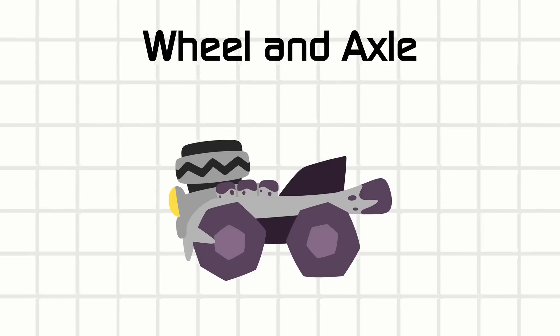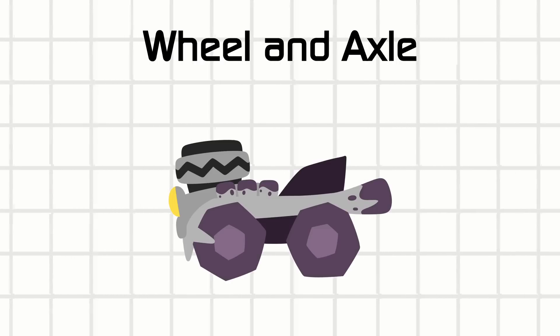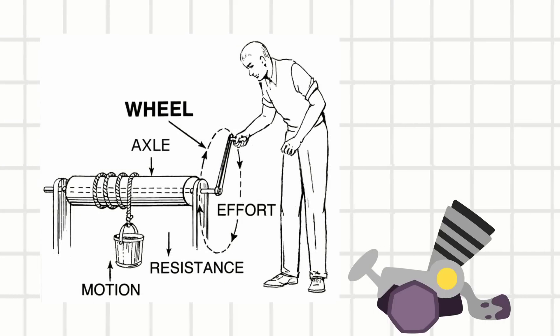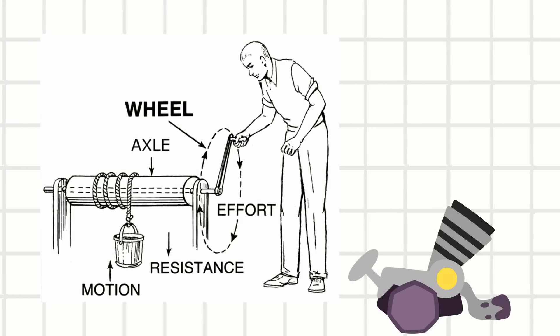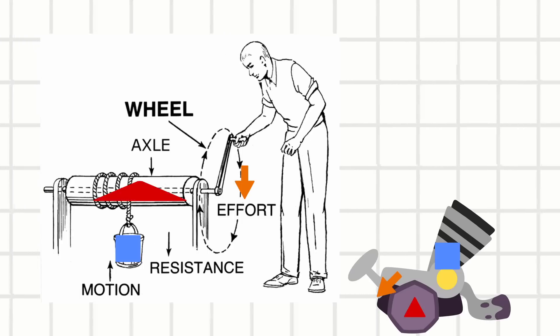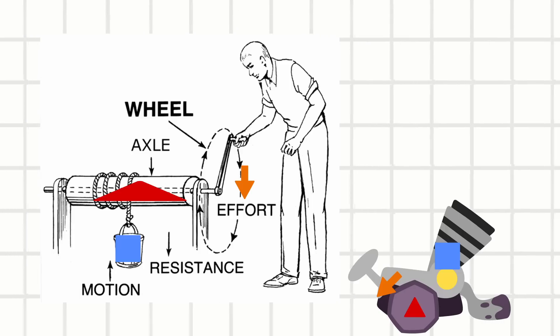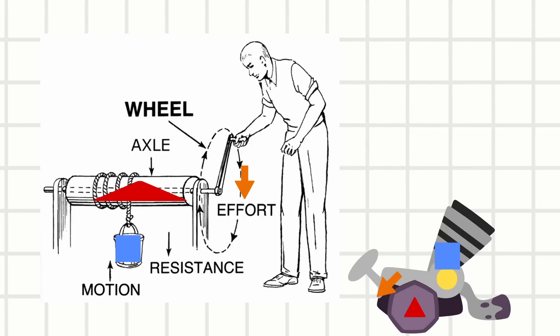So you rotate a wheel and the axle converts that into directional movement. Mechanical advantage depends on how thick the axle is compared to the wheel size and what you're turning. In a way, the wheel and axle can actually be called a messed up version of the first class lever, where you apply effort around the wheel, and the axle is the pivot point fulcrum, and the load is being moved directionally.